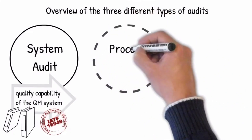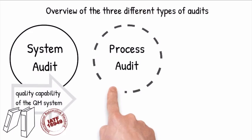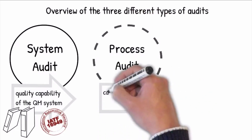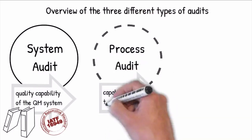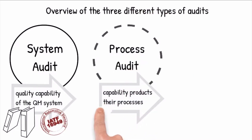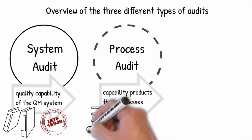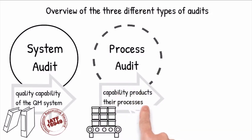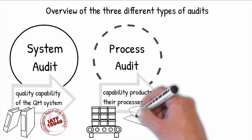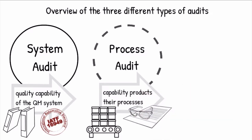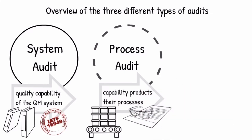The process audit focuses on the product quality and associated processes to determine the quality capability of selected products and product groups and their processes, and assesses whether there exists a potential risk that non-conforming products can escape to the customer.